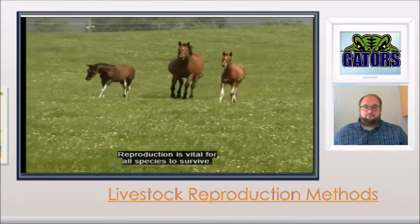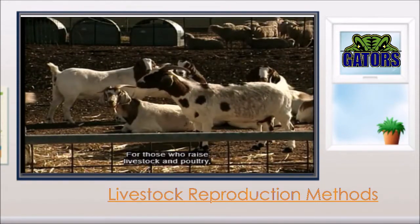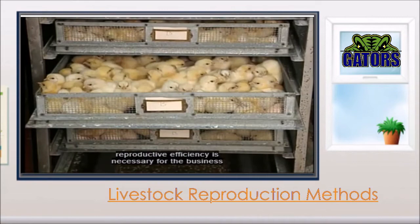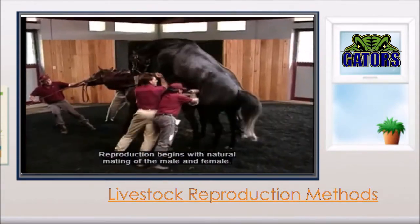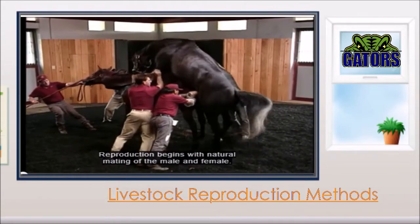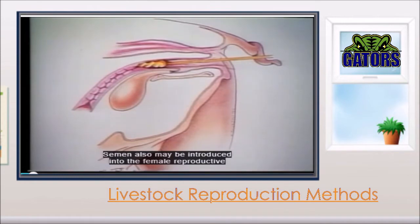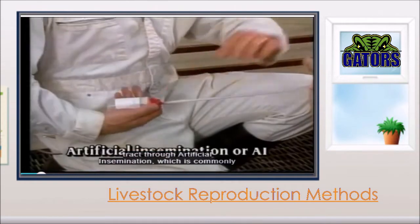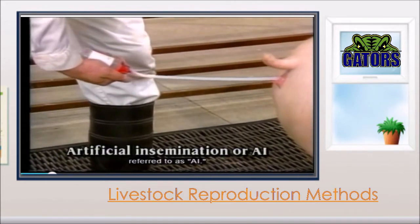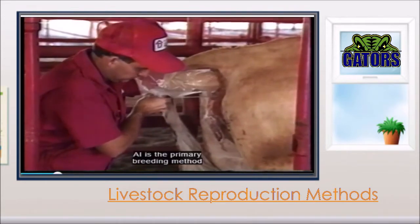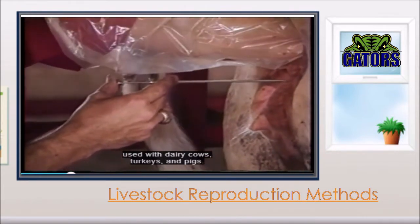Reproduction is vital for all species to survive. For those who raise livestock and poultry, reproductive efficiency is necessary for the business to remain profitable. Reproduction begins with natural mating of the male and female. Semen also may be introduced into the female reproductive tract through artificial insemination, which is commonly referred to as AI. AI is the primary breeding method used with dairy cows, turkeys, and pigs.